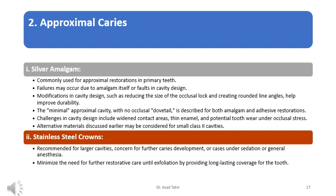Stainless steel crowns are recommended for larger cavities, concern for further caries development, or cases under sedation or general anesthesia. They minimize the need for further restorative care until exfoliation by providing long-lasting coverage for the tooth. Conclusion: operative treatment of primary teeth involves careful consideration of cavity size, material choice, and long-term durability. While silver amalgam remains a viable option for many cases, stainless steel crowns may be preferred for larger or high-risk cavities.